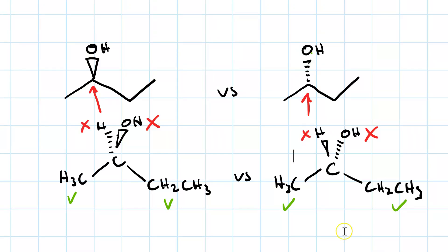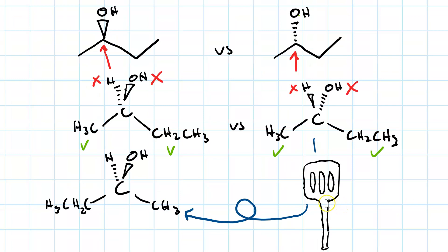Now, if we were to stick a spatula under this molecule and flip it over 180 degrees, then we'd have the hydroxyl and the hydrogen lining up, but our methyl would now line up with our ethyl and vice versa. So now I flip it over 180 degrees, and my hydroxyl lines up and my hydrogen lines up — but the methyl is now lining up with the ethyl, and the ethyl is now lining up with the methyl. Hence, these two molecules are chiral, and because they are non-superimposable mirror images of each other, we say they are a pair of enantiomers.